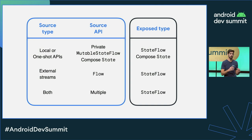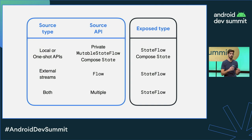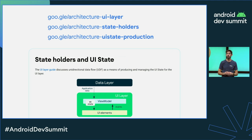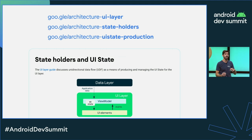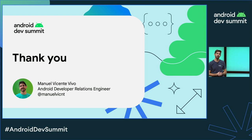We also saw how to produce screen UI state depending on the inputs. If you want to learn more, check out our documentation covering state holders, UI state production, and UI events — how to handle them in the UI and also from the ViewModel. Thank you so much for attending. I hope you enjoyed the talk and learned a bit more about the UI layer. Thank you so much for coming — talk to you later. Bye!